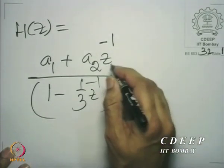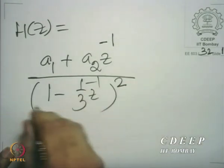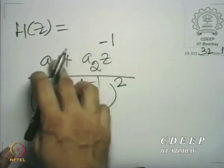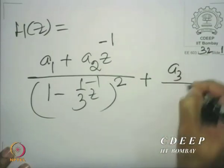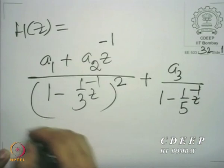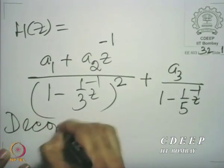If this is a degree 2, you must allow a degree 1 term here. And of course, A_3 divided by 1 minus 1 fifth z inverse. And this decomposition can be done by partial fractions.